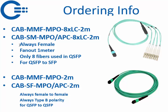For single mode it's CUP-SMF-MPO-APC to 8x LC — you need the APC inside the optic — so 8x LC single mode, available in 2 meters and other lengths. We always use female connectors for the MPO end. The fan-out tail is 1 meter. Only 8 fibers are used for QSFP, not the middle four, and this cable is really made for QSFP to SFP connections.